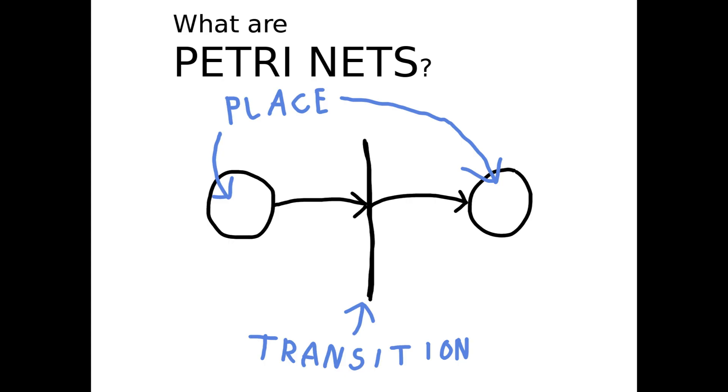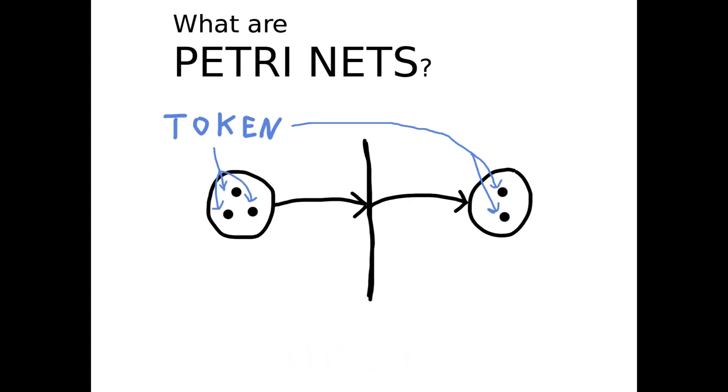A place can contain any number of tokens. Tokens are usually depicted as black circles.